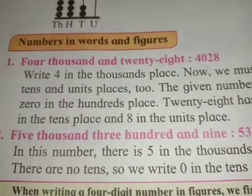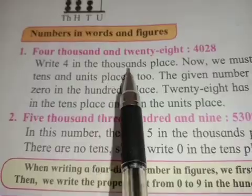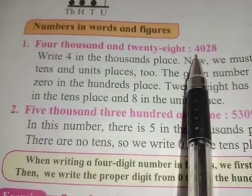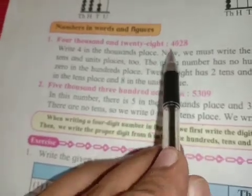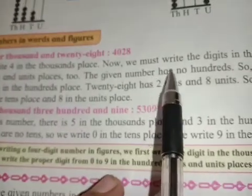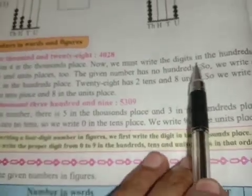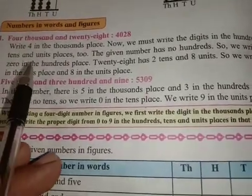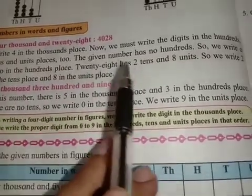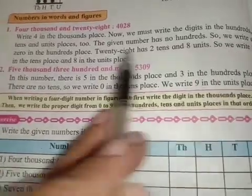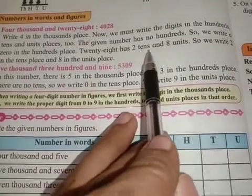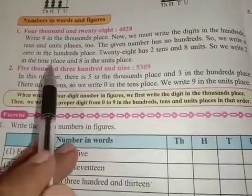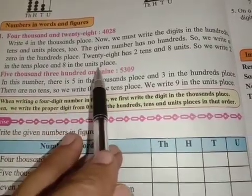Now let's understand four thousand and twenty-eight. Write four in the thousands place, because this is a four-digit number and four-digit numbers go in the thousands place. We must write digits in the hundreds, tens, and units places. The given number has no hundreds, so we write zero in the hundreds place. Twenty-eight has two tens and eight units, so we write two in the tens place and eight in the units place.